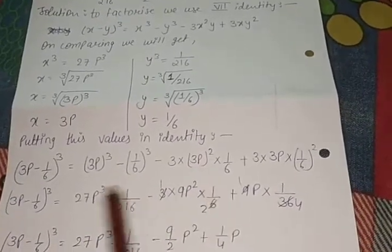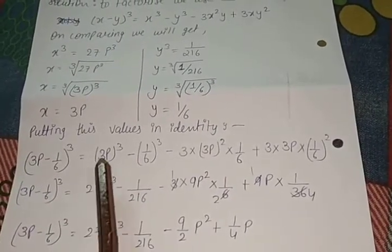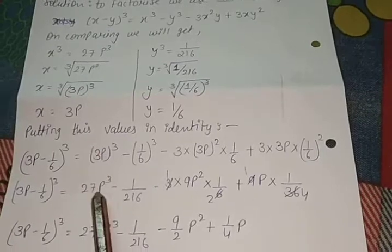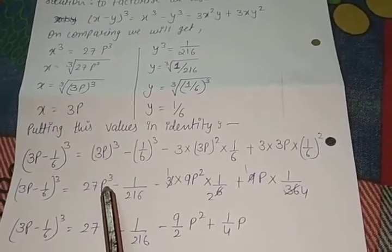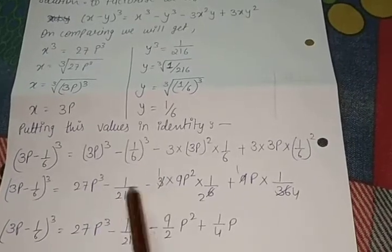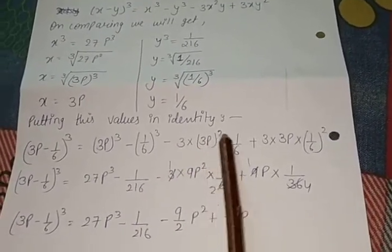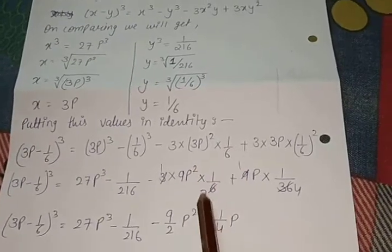Now if we look at the solution, 3³ is 27. 3 × 3 × 3 is 27. p³ minus we get as it is. (1/6)³ is 1/216 minus 3 as it is. 3² is 9. p² is p². And 1/6 as it is.